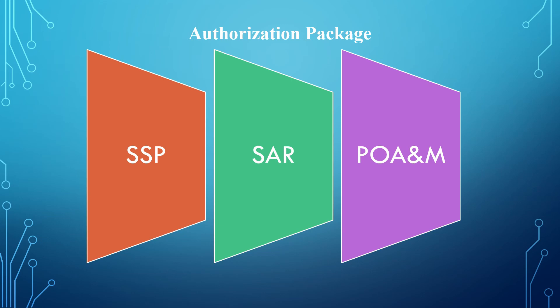The next document is the POAM, which is the plan of action and milestones. The plan of action and milestones is a CA-5 control. It is used to document any identified vulnerability from the POAM report or from a vulnerability scan report, and is used to track those vulnerabilities to remediation.